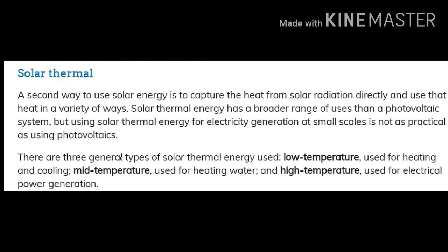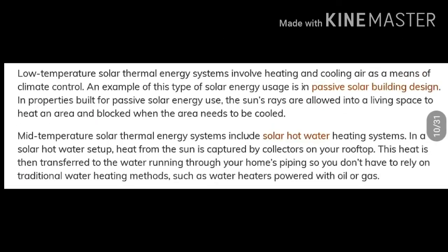There are three general types of solar thermal energy: low temperature, which is used for heating and cooling; mid-temperature, which is used for heating water; and high temperature, which is used for electrical power generation. Low temperature solar thermal energy systems involve heating and cooling air as a means of climate control. An example of this type of solar energy use is in passive solar building designs, where sun rays are allowed into a living space to heat an area and blocked when the area needs to be cooled.